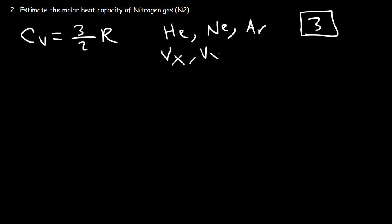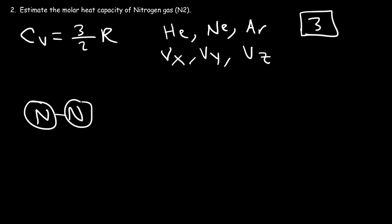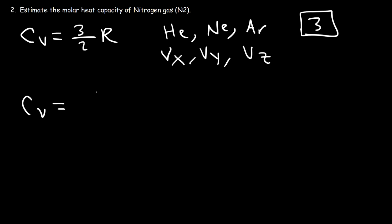Monoatomic gas particles can move in the x, y, or z direction — they only have translational energy, no vibrational or rotational energy. A diatomic molecule like N₂ can also move in all three directions, but it can also bend and stretch — its bonds can vibrate. So it has more degrees of freedom. Therefore, the molar heat capacity for a diatomic gas is greater than for a monoatomic gas, and nitrogen has 5 degrees of freedom, giving CV = (5/2)R as opposed to (3/2)R.